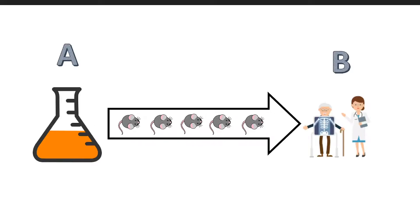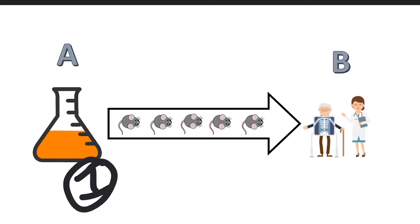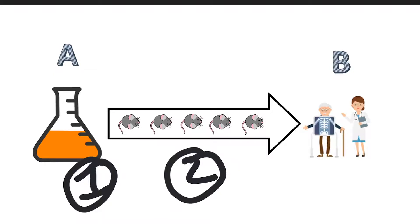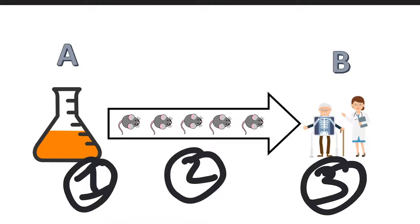Most of us as biomedical researchers have a general understanding of the process by which a treatment we study in the laboratory setting might one day make it to the clinic, and in some ways it can be seen as quite simple. Step one: discover compound. Step two: make sure it works in your animal model of choice. Step three: start treating people.